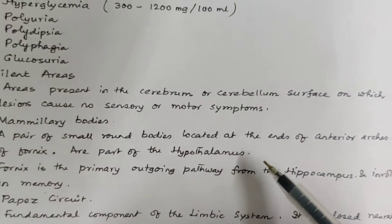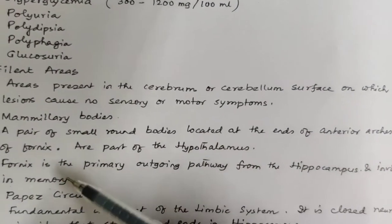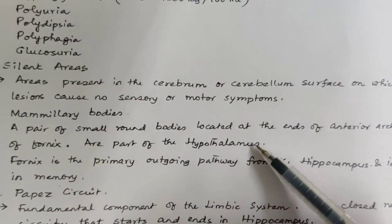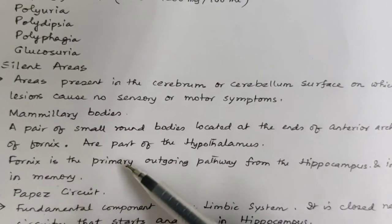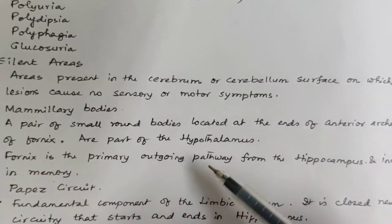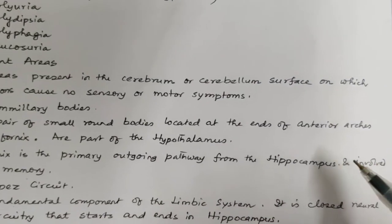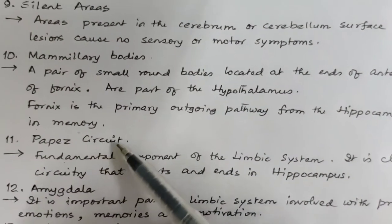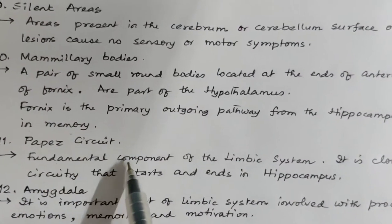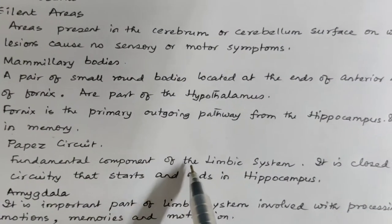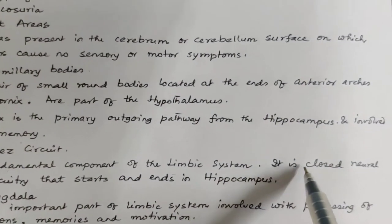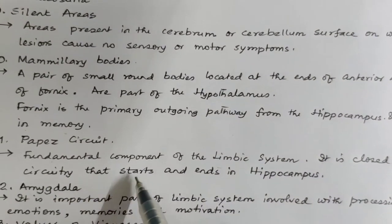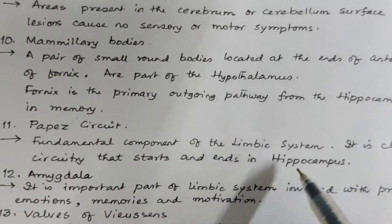The fornix is the primary outgoing pathway from the hippocampus and is involved in memory. What is Papez's circuit? It is a fundamental component of the limbic system of the brain — a closed neural circuitry that starts and ends in the hippocampus.